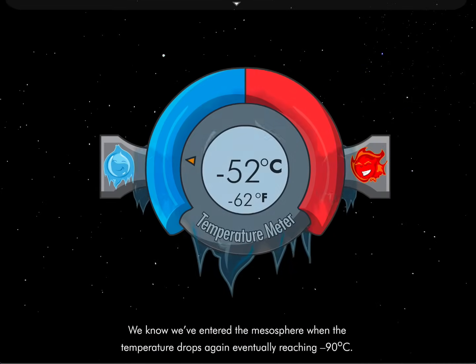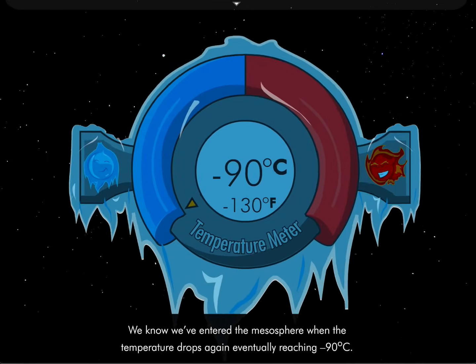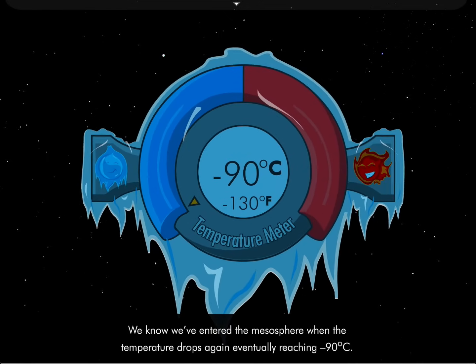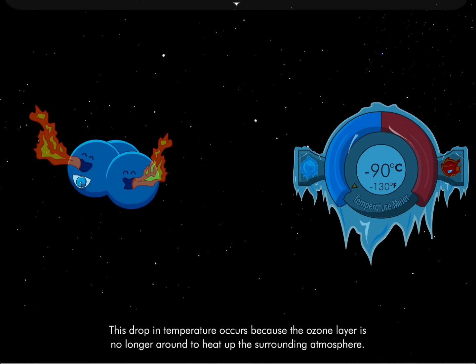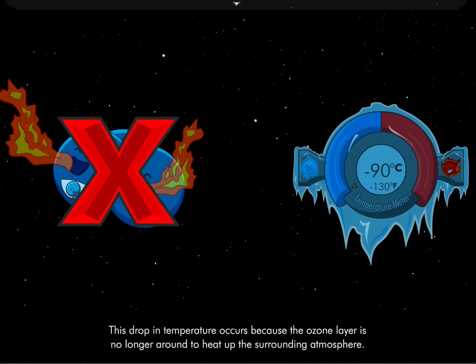We know we've entered the mesosphere when the temperature drops again, eventually reaching negative 90 degrees. This drop in temperature occurs because the ozone layer is no longer around to heat up the surrounding atmosphere.